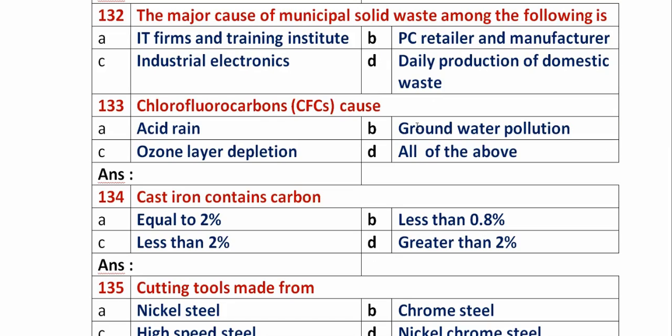Question 132: The major cause of municipal solid waste among the following is? Option A: IT firms and training institutes. Option B: PC retailers and manufacturers. Option C: industrial electronics. Option D: daily production of domestic waste. The main source of municipal solid waste is the daily production of domestic waste. So option D is the right answer.